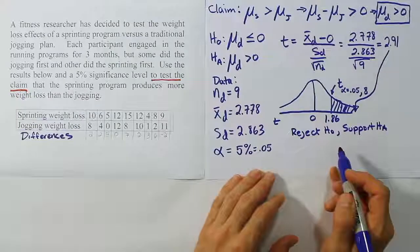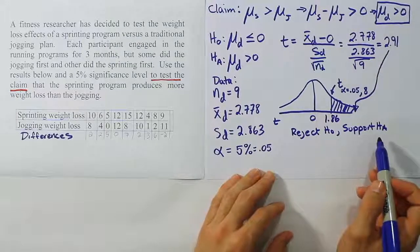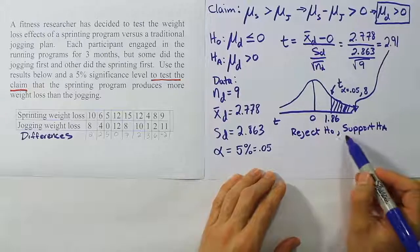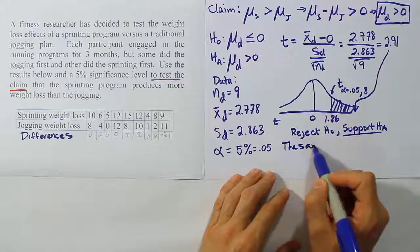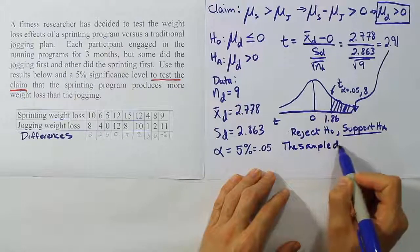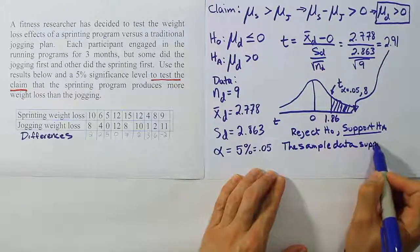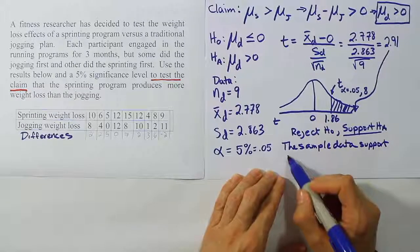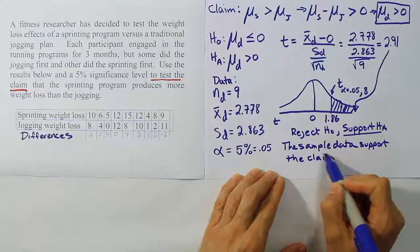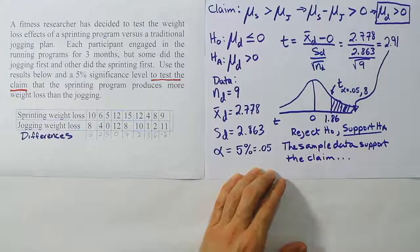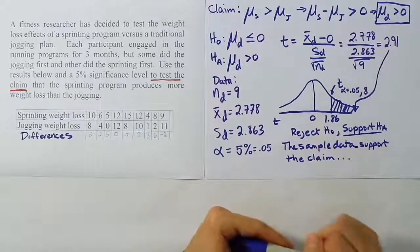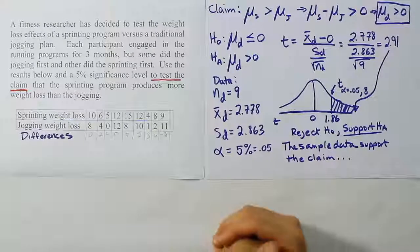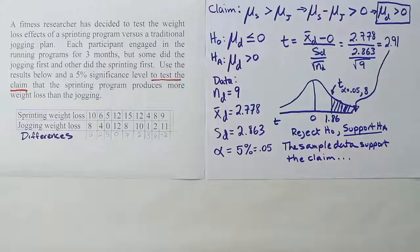Now we just have to go back to our claim and ask, was our claim H0 or HA. And you see that our claim here was HA. So we're going to use this terminology. We're going to say we support the claim. So the sample data support the claim. And what's the claim? The claim is that the sprinting program produces a greater average weight loss than the jogging program. So that would mean that it's better to sprint for cardiovascular fitness than it is to jog, if there is a weight loss at least.